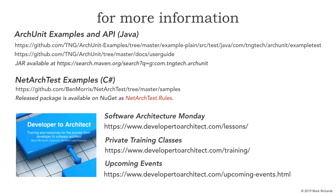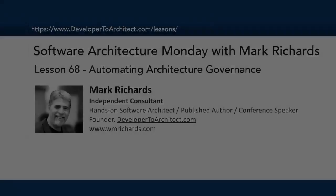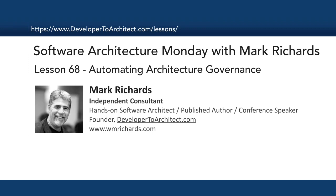For other information, you can go to Developer to Architect. These lessons are housed in Software Architecture Monday at developer2architect.com/lessons. I offer private training classes via the training link, and you can see where I'll be available through online training or conferences and public events at my upcoming events page. This has been Lesson 68, Automating Architecture Governance. I encourage you to look at those links to go deep on how to use this to automate your architecture decisions. This has been Software Architecture Monday — my name is Mark Richards, thank you so much for listening.